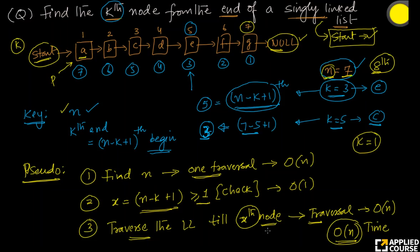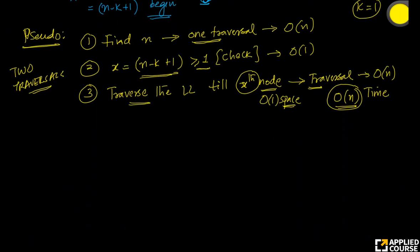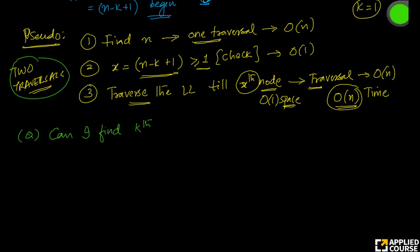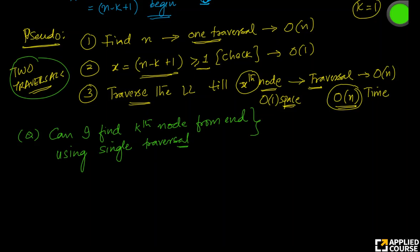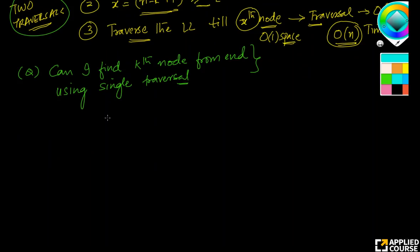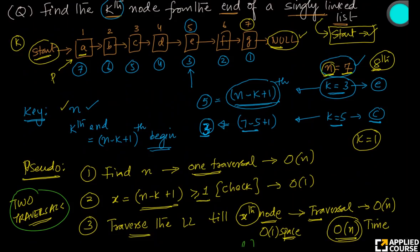This is the first algorithm. Can I perform better? The next question I have is: while time complexity is O(n) and space complexity is O(1), instead of two traversals, can I find the kth node from the end using a single traversal? A single traversal will obviously take less time than two traversals. Let us think about how to do it intuitively, going back to the same diagram.